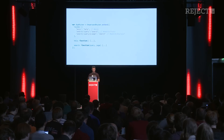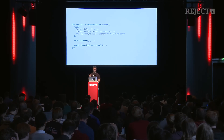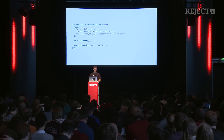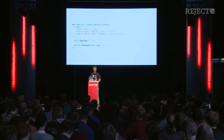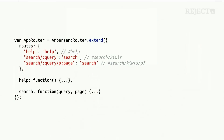The router — it's a standard router. It will register your routes and trigger functions according to the route you are currently on. It will handle the back button, history, you can navigate, and redirect your users.